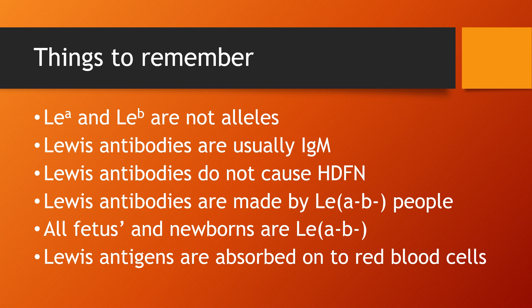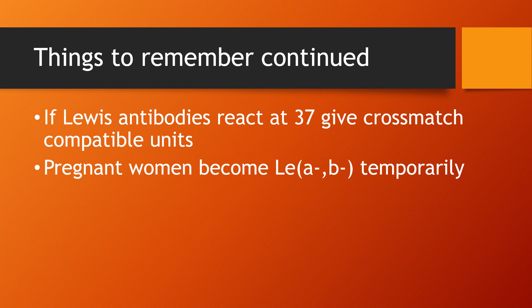Things to remember about the Lewis blood group system: Lewis A and Lewis B are not alleles. Lewis antibodies are usually IgM. Lewis antibodies do not cause hemolytic disease of the fetus and newborn. Lewis antibodies are made by Lewis A negative B negative people. All fetuses and newborns are Lewis A negative B negative. Lewis antigens are absorbed onto red blood cells. If Lewis antibodies react at 37°C, give cross-match compatible units. Pregnant women become Lewis A negative B negative temporarily.